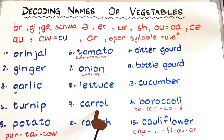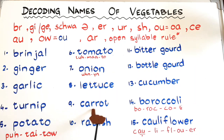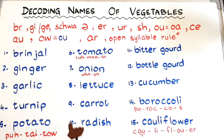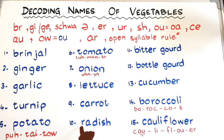At number nine we have carrot. To decode this tricky word, tell the children to write 'car' and 'rot' — car and rot makes carrot. At number ten we have radish. The open syllable rule applies here: R-A says 'ray', and D-I-S-H says 'dish' — radish.